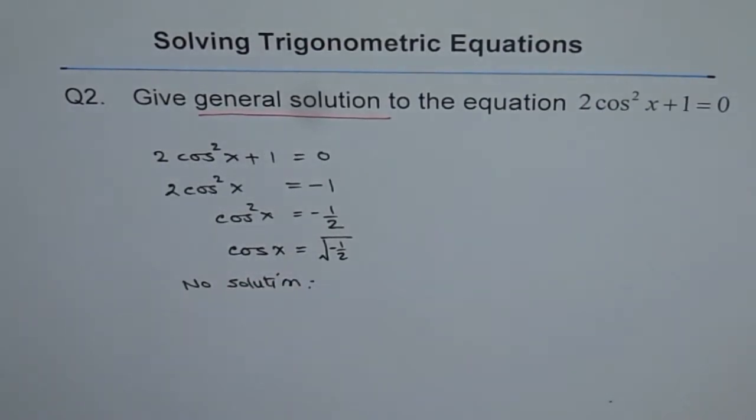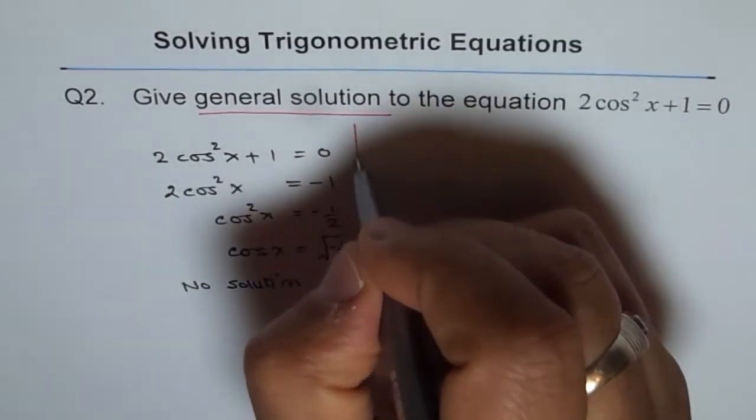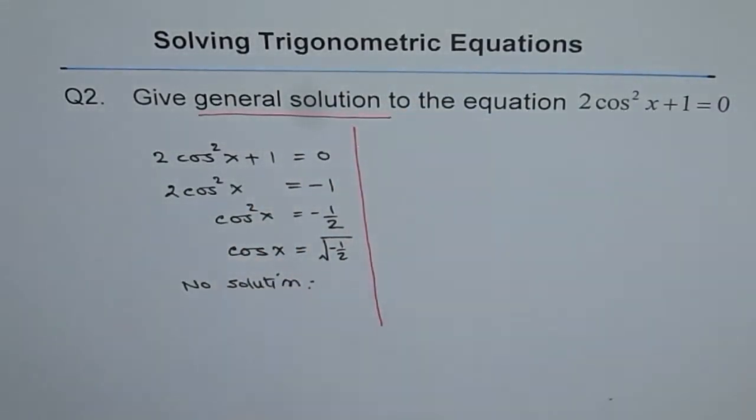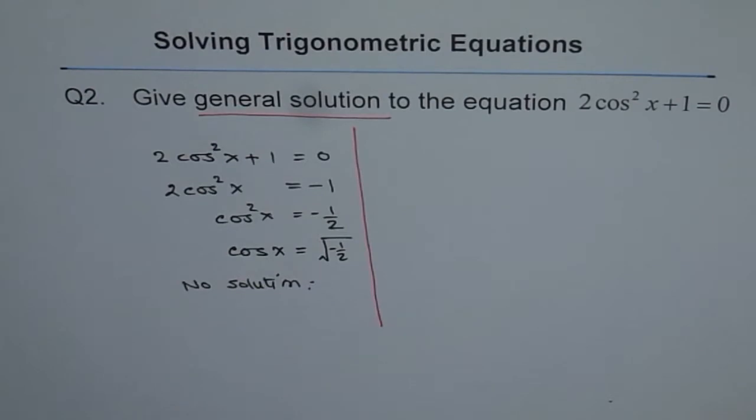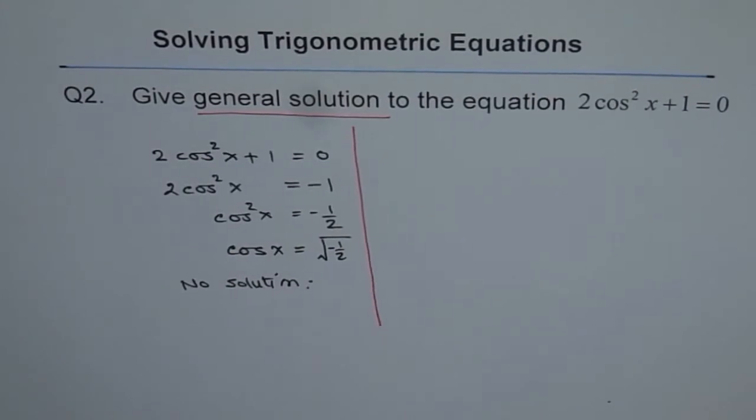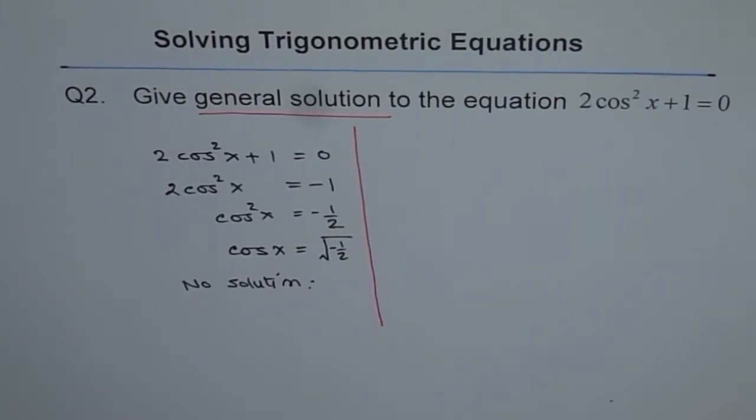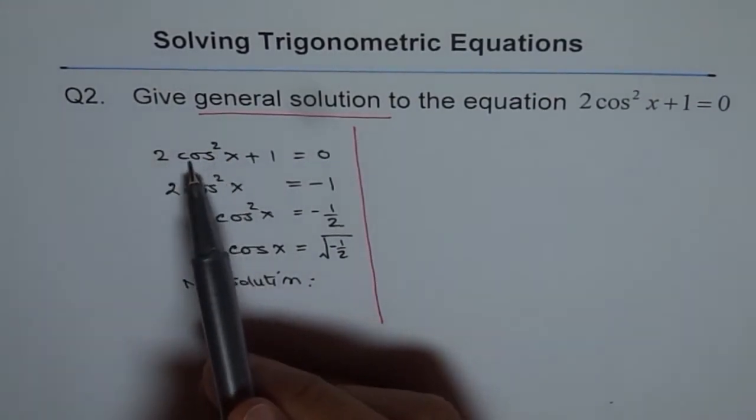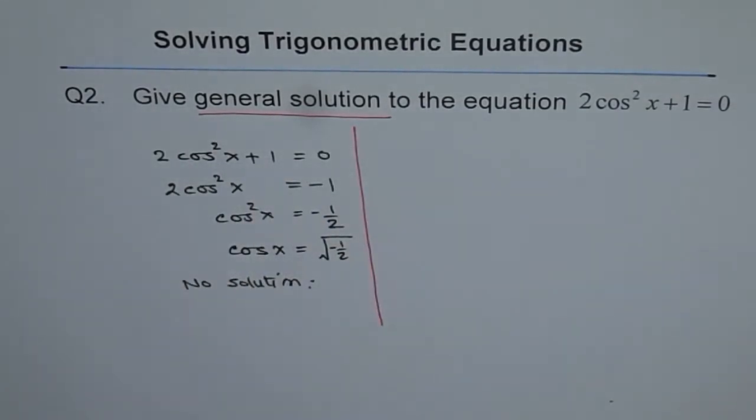Now, let's change this question. So if the question is as written here, then we definitely have no solution for this question, because the square of cos cannot be negative. Both the quantities here are positive, so there is no solution.